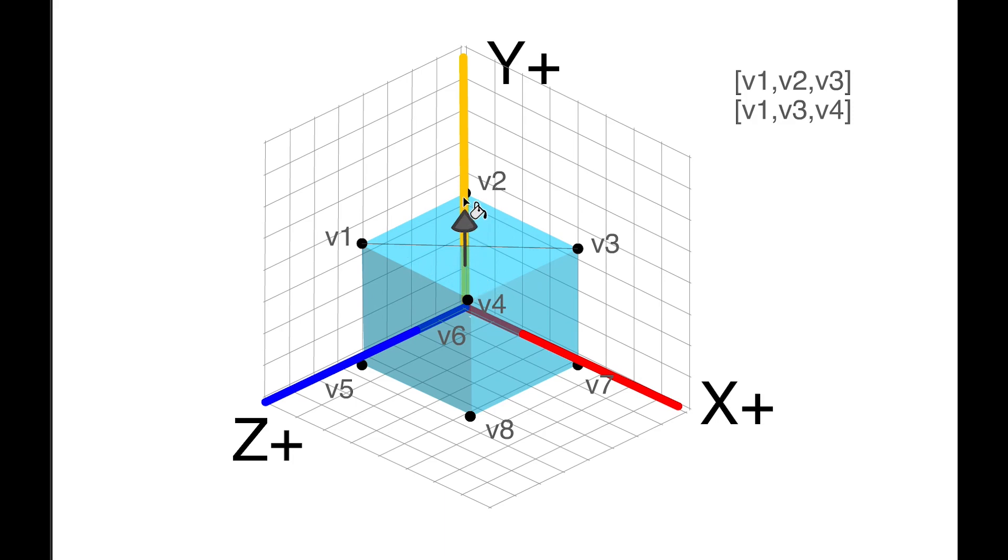...have something that sticks out of every one of our triangles and often every one of our vertices, and this is a normal. A normal allows us to calculate the direction that light's coming in and use this normal to calculate the value that the color should be for each pixel in our rendered screen.